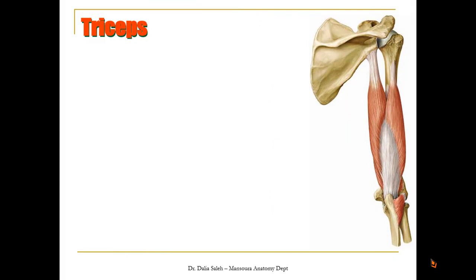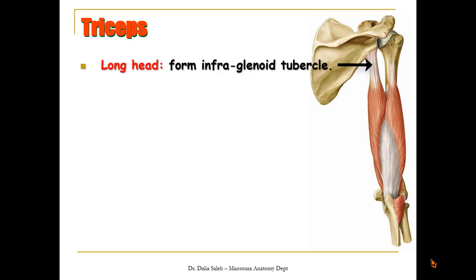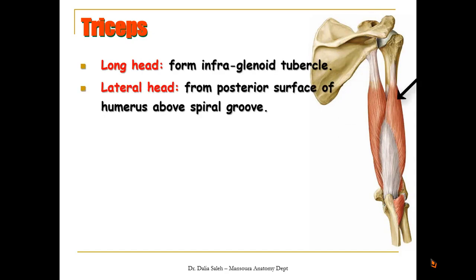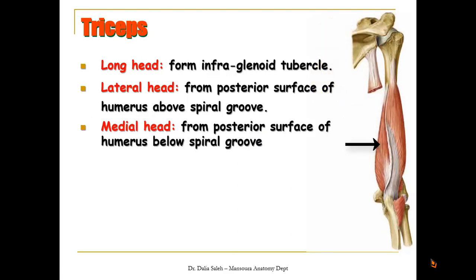At the back of the arm we have the triceps muscle which arises by three heads: the long head from the infraglenoid tubercle of the scapula, the lateral head from the posterior surface of the humerus above the radial groove or spiral groove, and the medial head, also called the deep head, which arises from the posterior surface of the humerus below the spiral groove.